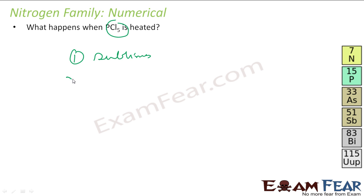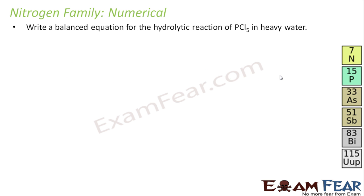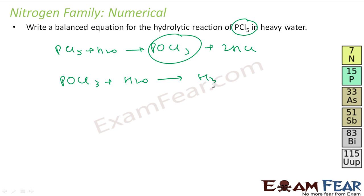The next question is: write a balanced equation for the hydrolytic reaction of PCl5 with water. So we have seen PCl5 when you react with water, it forms POCl3 - we have seen this reaction - and it forms hydrochloric acid. This POCl3 will further react with water actually to form H3PO4 and HCl.